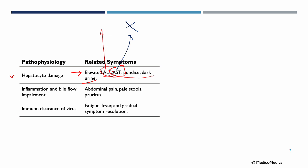Other pathophysiological correlations: inflammation and bile flow impairment produce symptoms of abdominal pain, pale stools, and itching. During immune clearance of the virus, we expect fatigue, fever, and gradual symptom resolution.